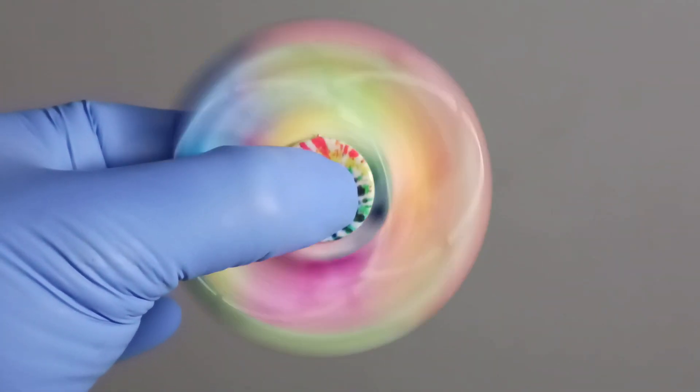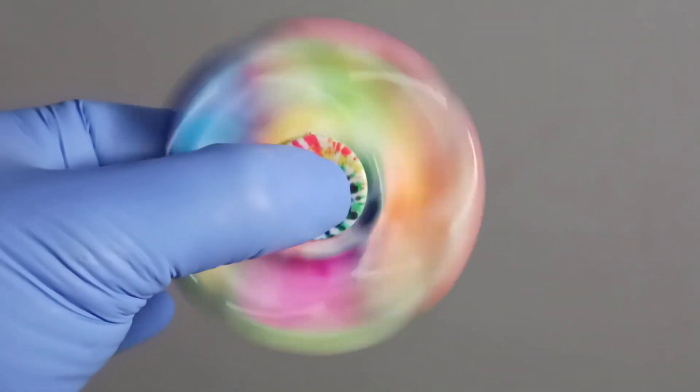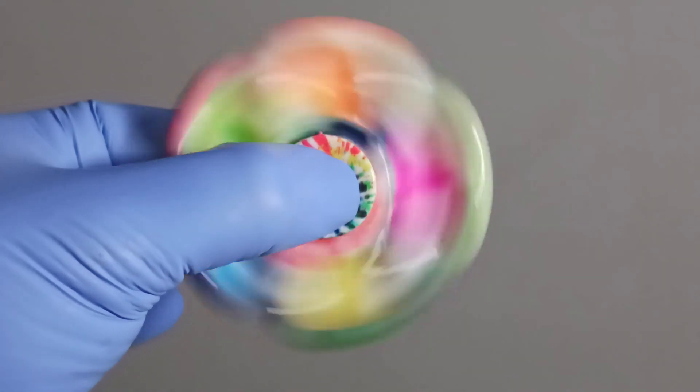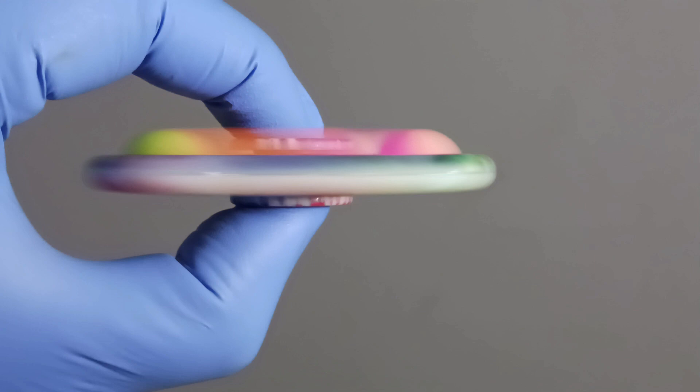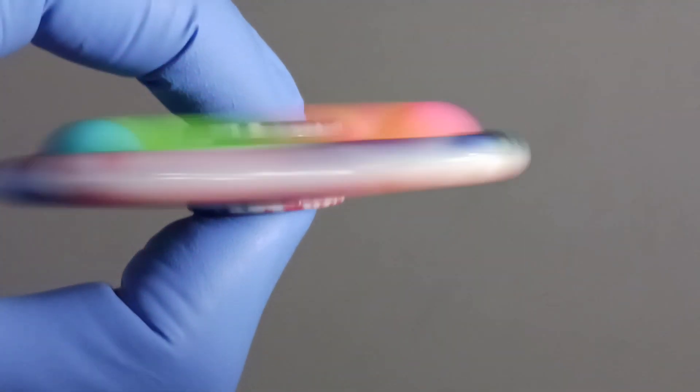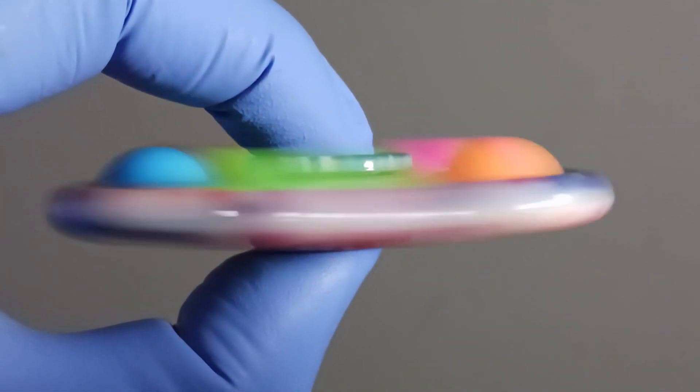The basic physics behind the fidget spinner is the conservation of angular momentum. Angular momentum is a physical quantity that describes the amount of rotational motion that an object possesses. It is given by the equation L equals I omega.